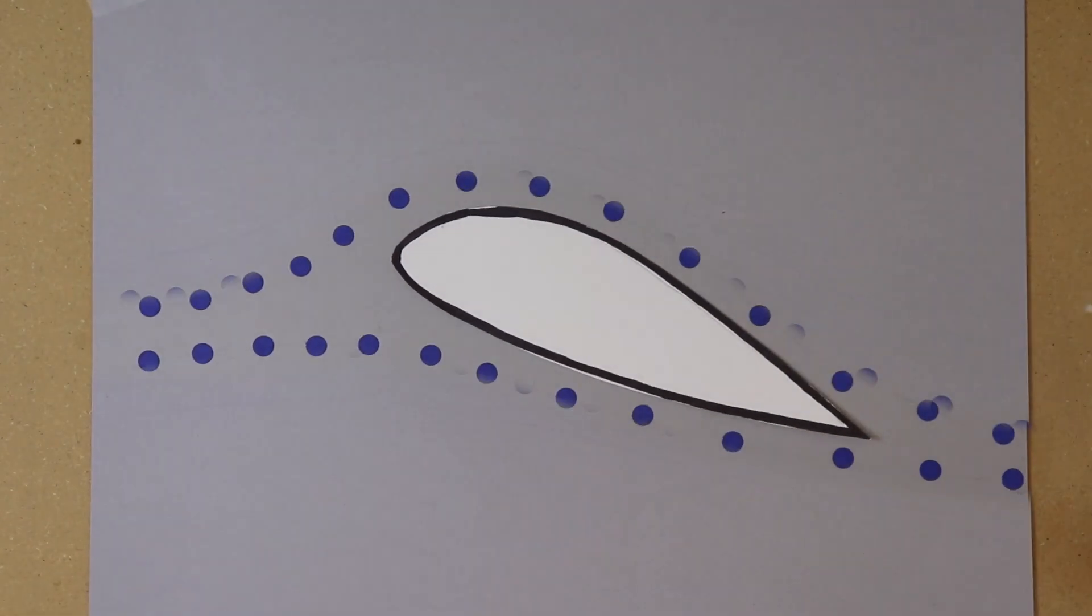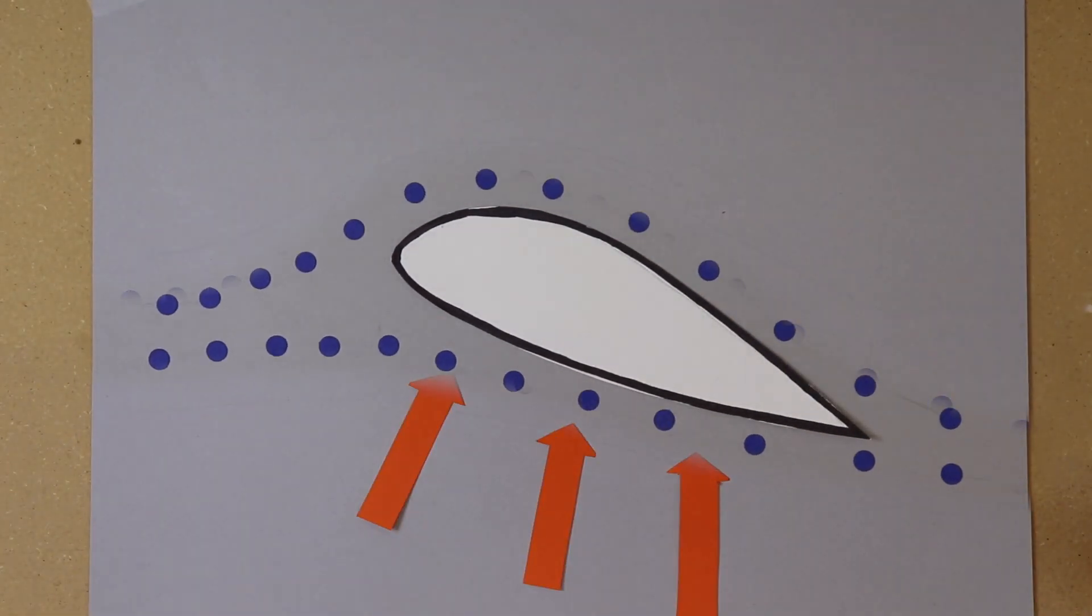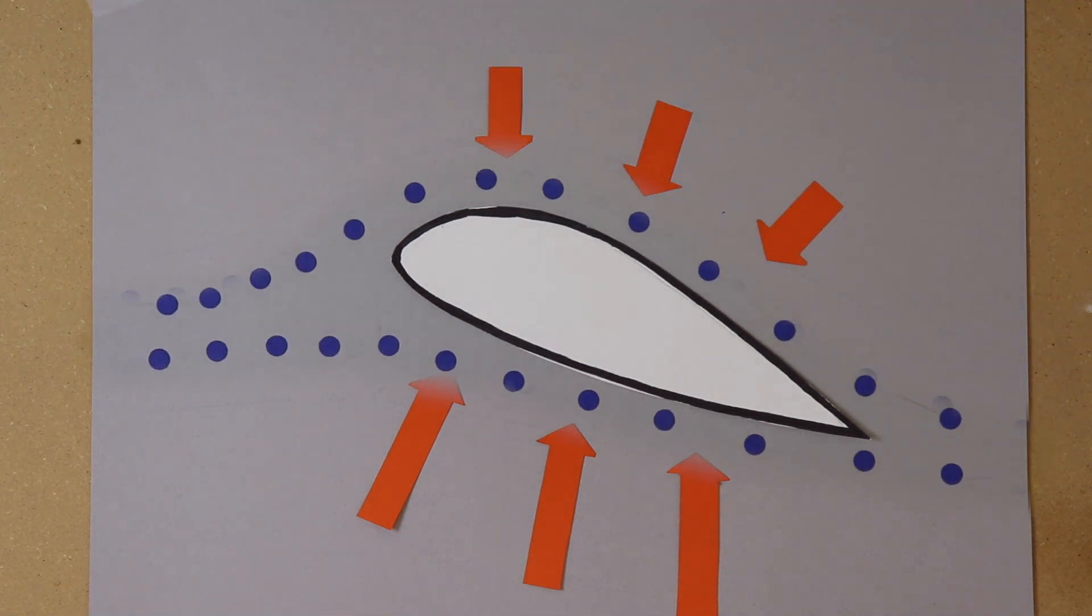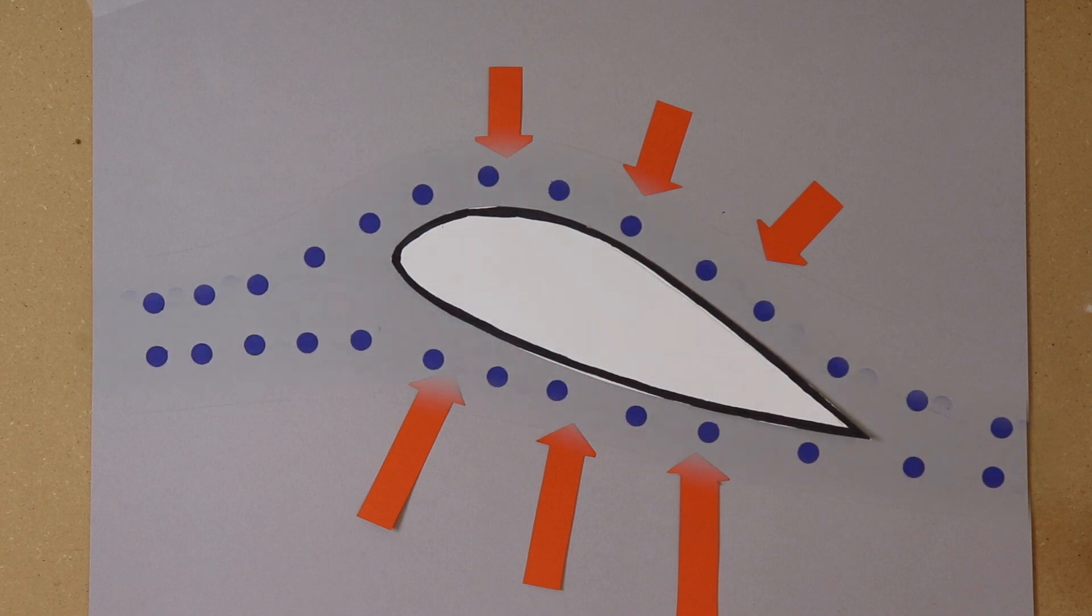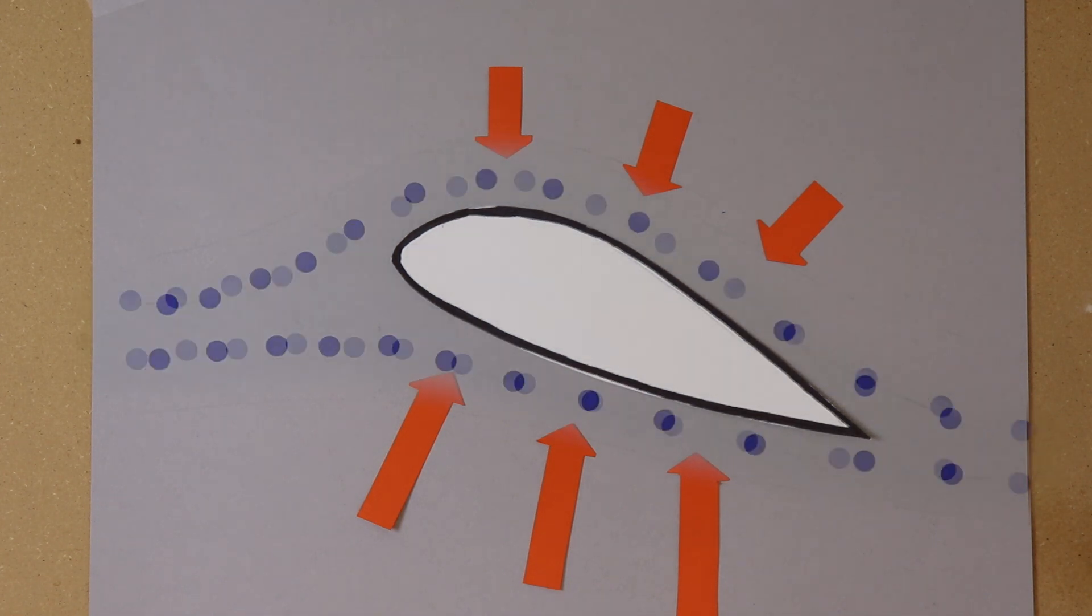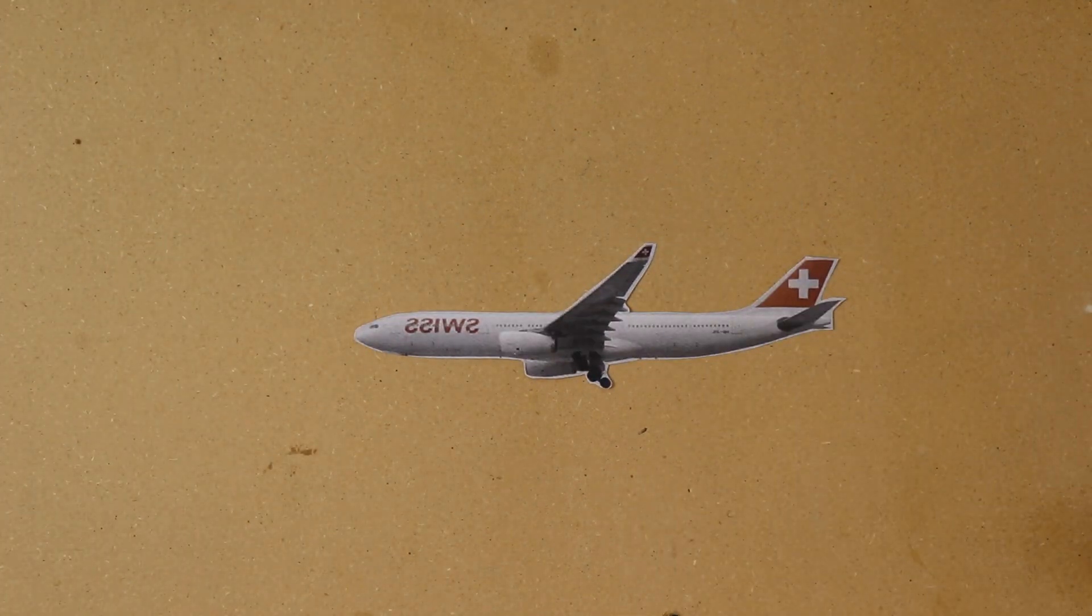There is therefore a greater pressure on the bottom of the wing where the air is moving slower, and a lesser pressure on the top of the wing where the air is moving faster. Just like the piece of paper, the forces pushing up are greater than the forces pushing down, and this creates a lift force pushing the wing upward and keeping the plane in the sky.